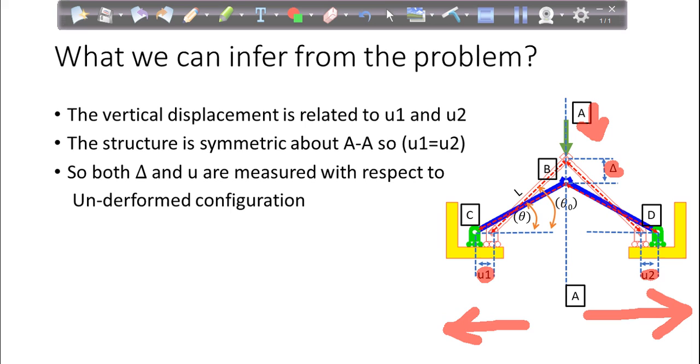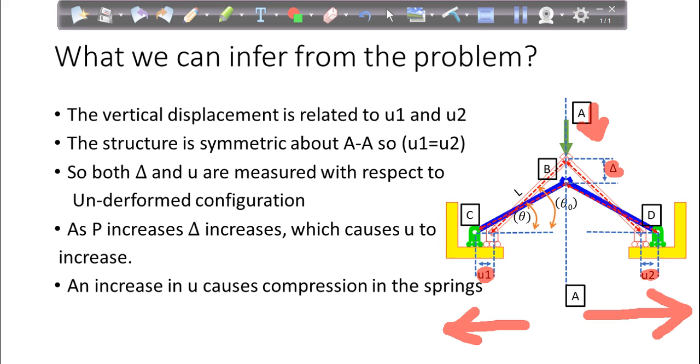So both delta and U are measured with respect to undeformed configuration. As P increases, that means as you are increasing the load, it will cause delta to increase and simultaneously U will increase. An increase in U causes compression in springs. So I think I have explained the problem in detail right now. And I think now we should start solving our problem using some equations.